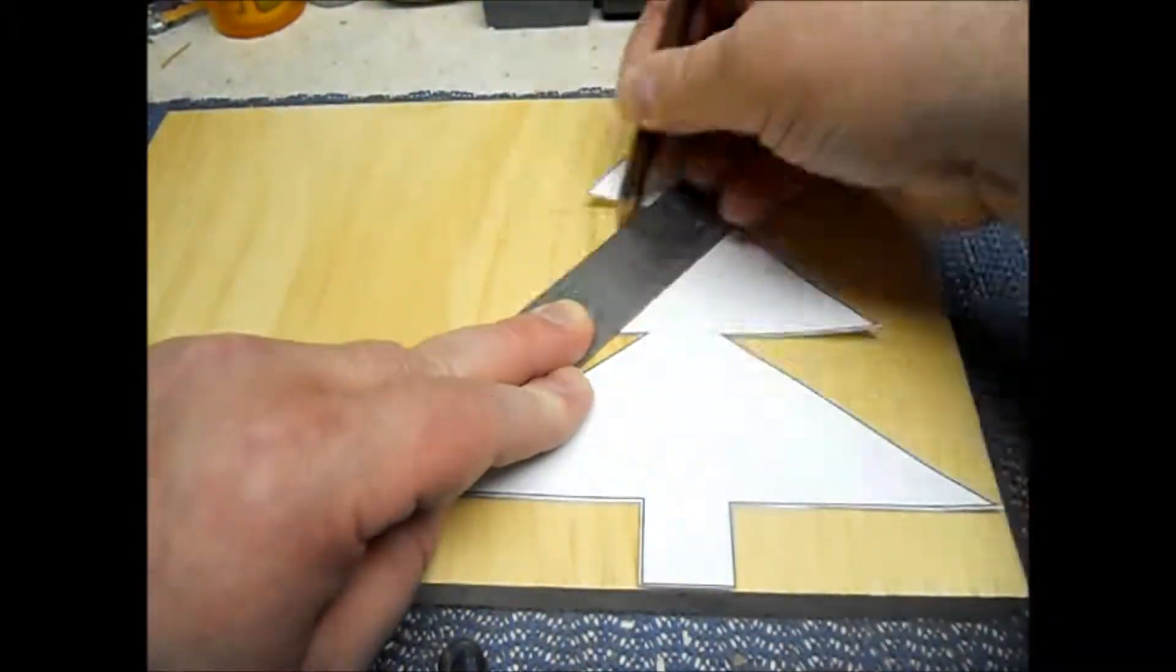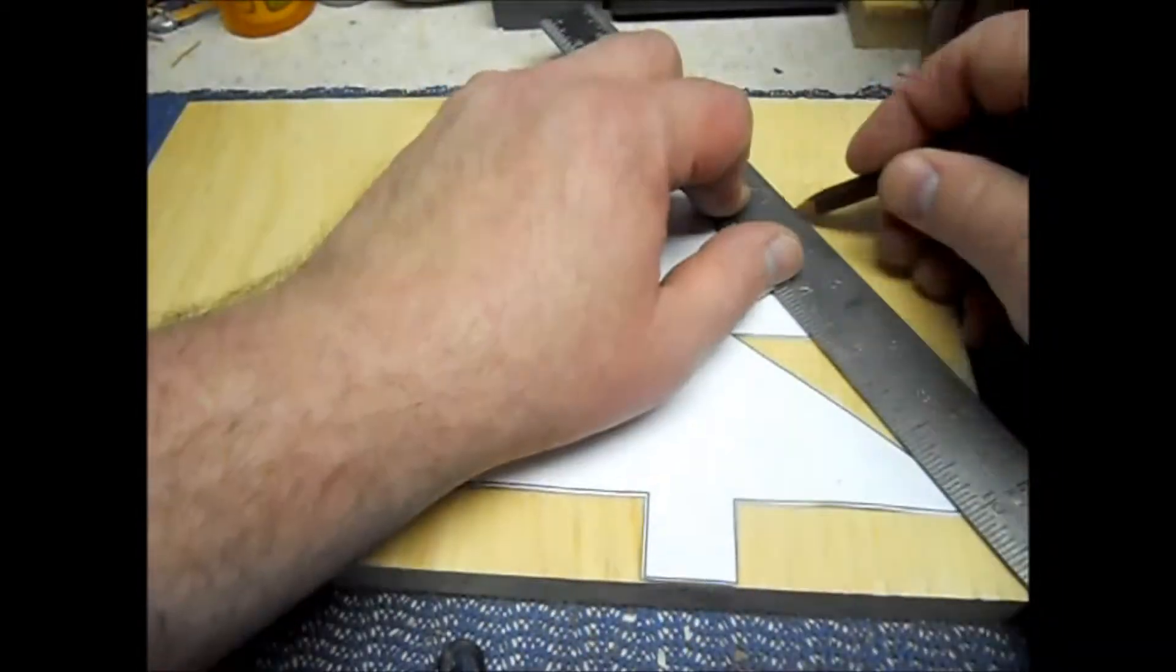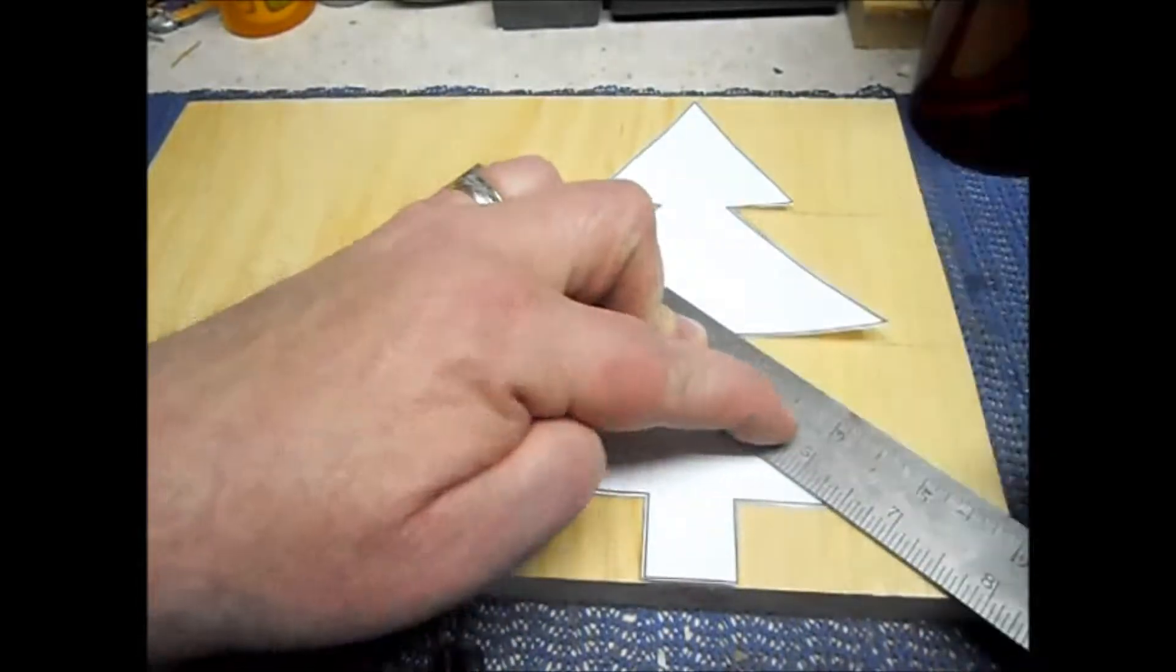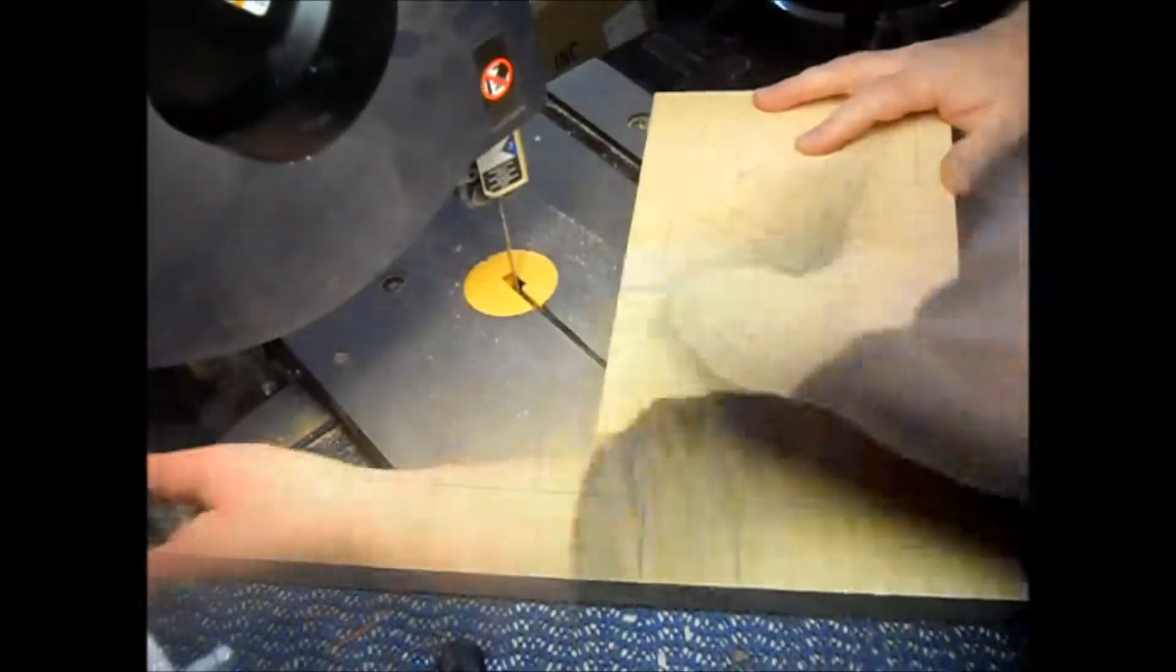I like to use a ruler to help keep my lines straight. Once the pattern is traced, I move to the bandsaw.